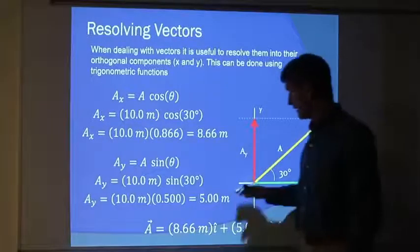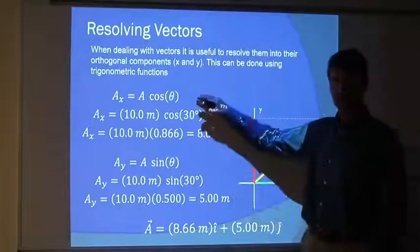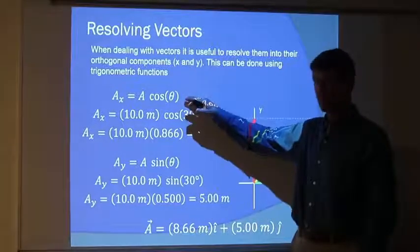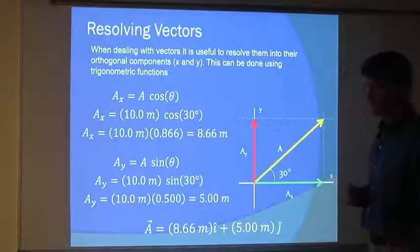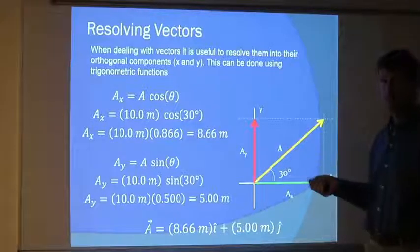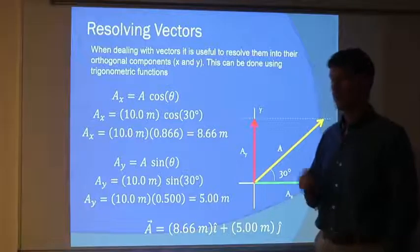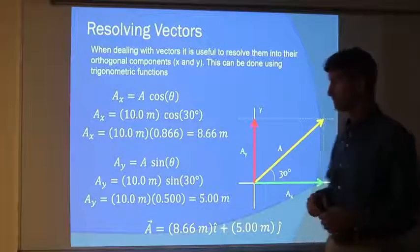We saw that if we have some vector A, we can break it into its x component and y component using trigonometric functions, using cosine and sine. Here we have some vector A. It's 10 meters long. How far does it go in the x direction? How far does it go in the y direction if the vector makes a 30 degree angle with respect to the horizontal?